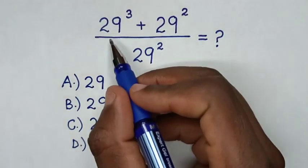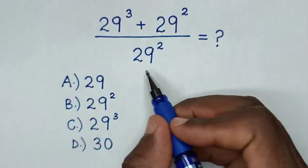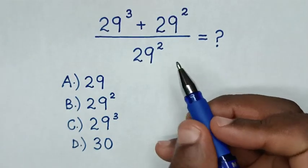Hello! How to solve (29³ + 29²) / 29² by selecting between the answers?